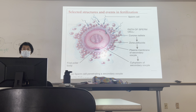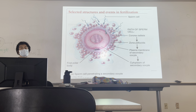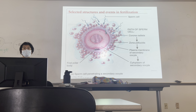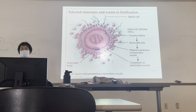In real life, the first polar body doesn't have to divide because it's not going to be fertilized. It just undergoes apoptosis. So meiosis doesn't always produce four cells in females, though in males it always does. In females, the polar body sacrifices its contents to support the developing egg — that's why polar bodies are smaller. You just need one healthy egg.